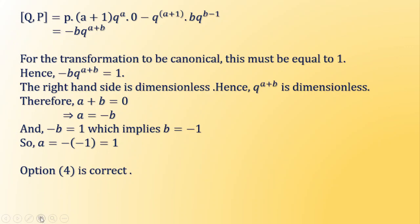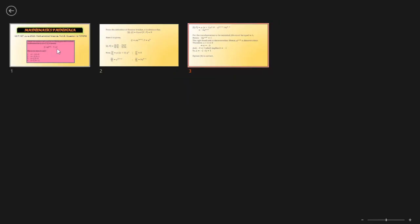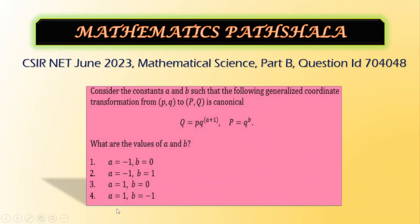So our correct option is here: option 4, a = 1 and b = -1. Our correct option is option 4.